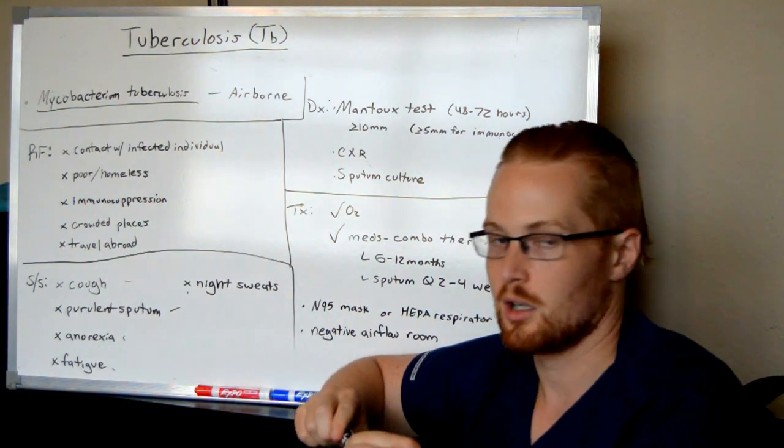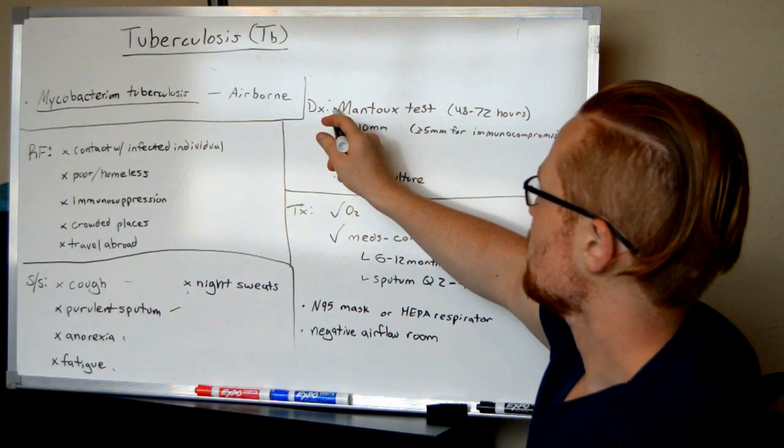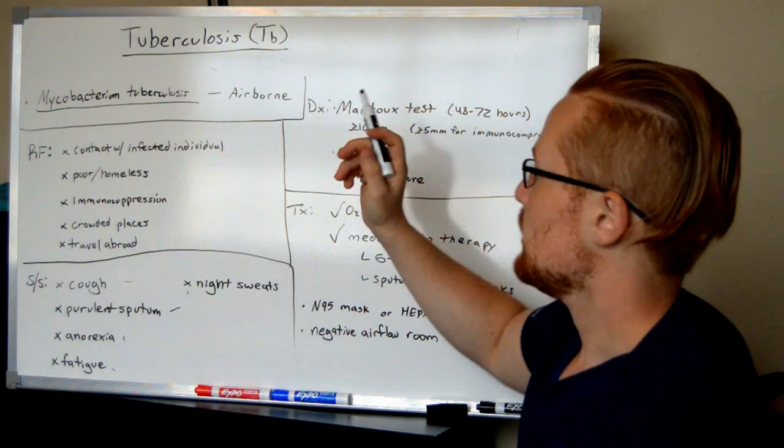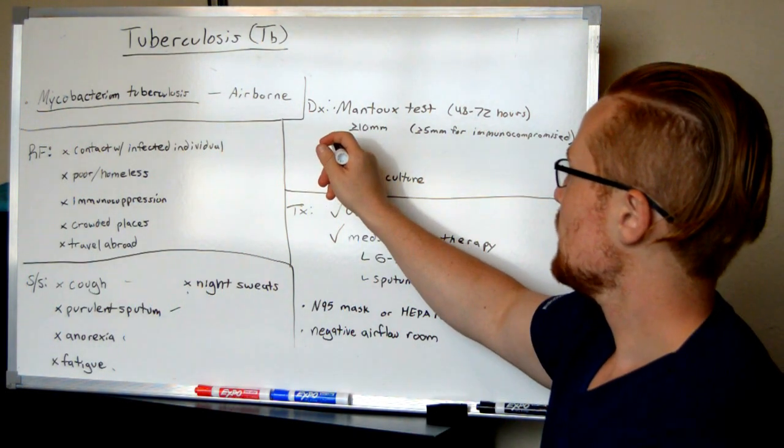These signs tell the doctor maybe it's not just any infection, maybe it's tuberculosis. So what they'll do is they're going to do a Mantoux test because they can poke you and they can check in 48 to 72 hours to see if it is swollen. It is positive...